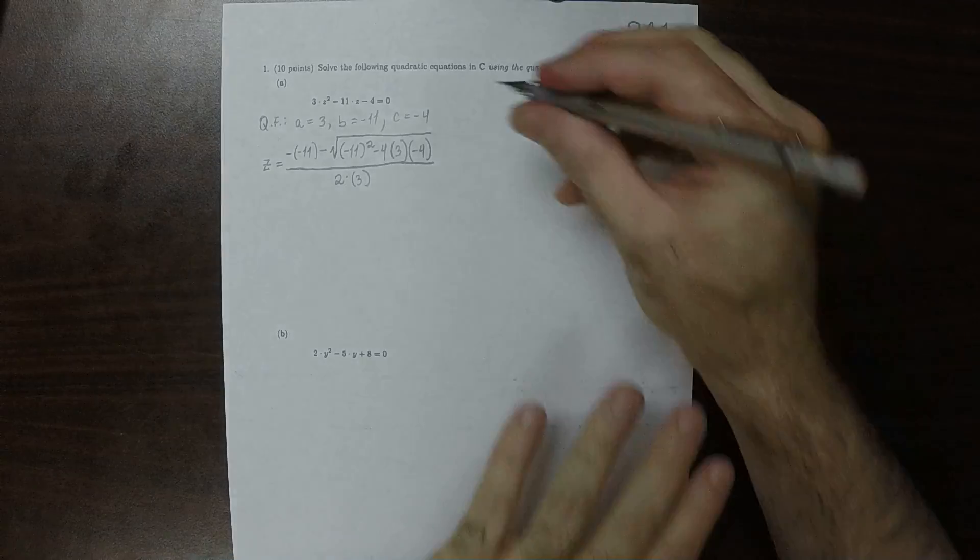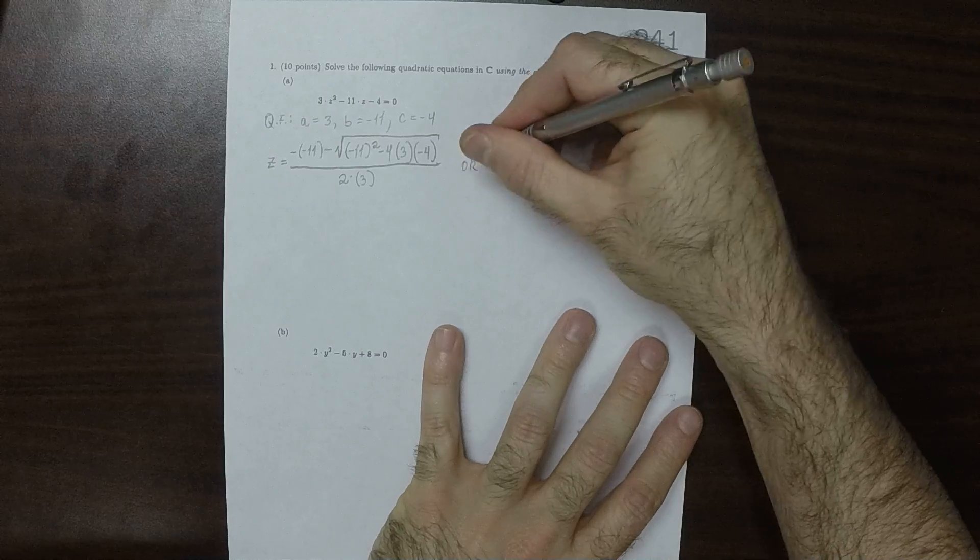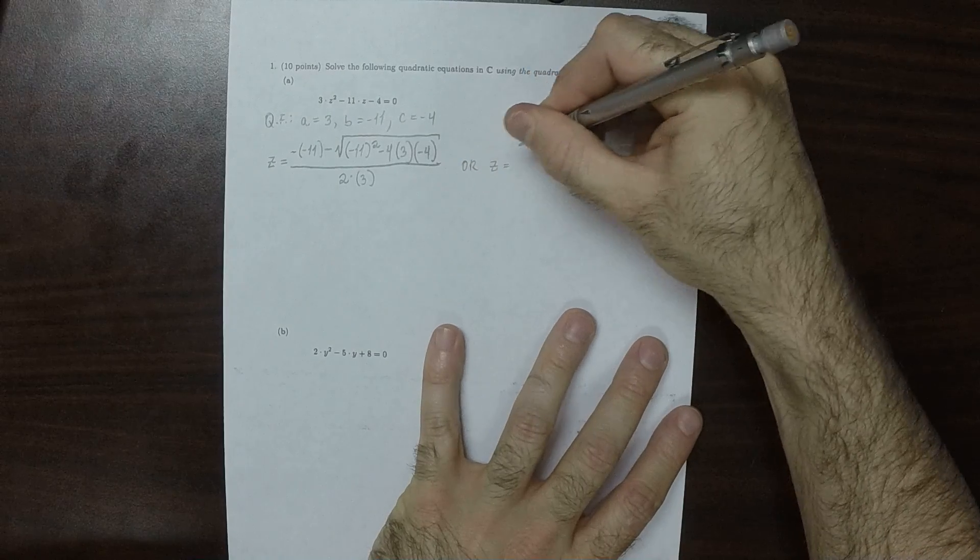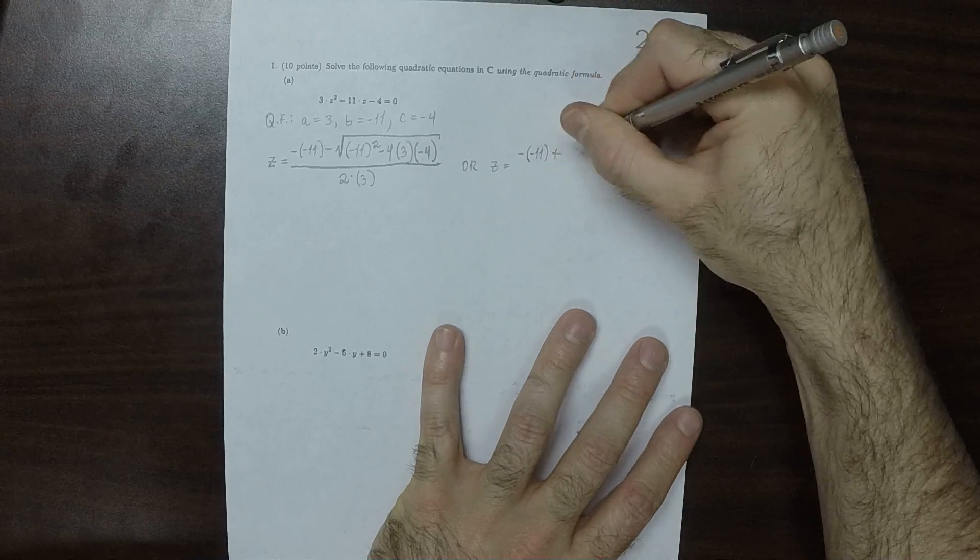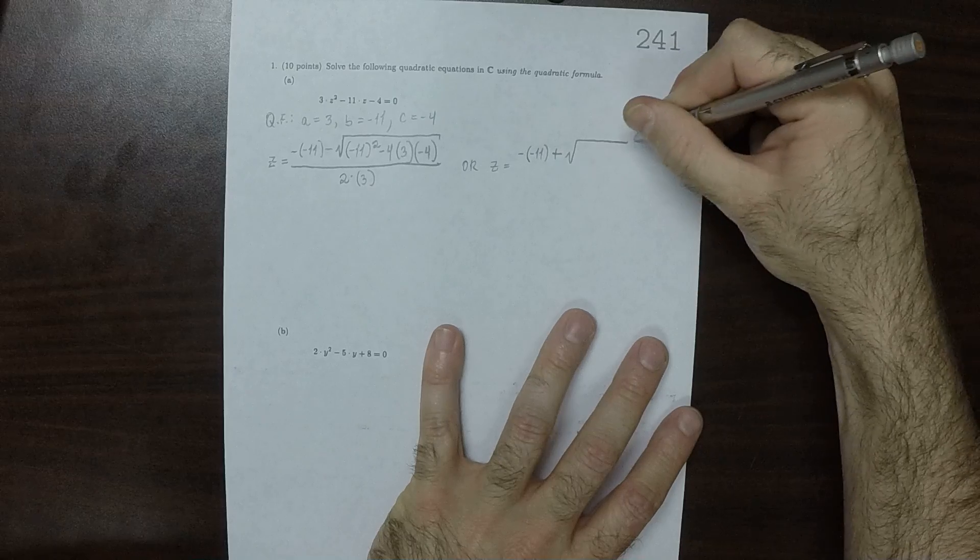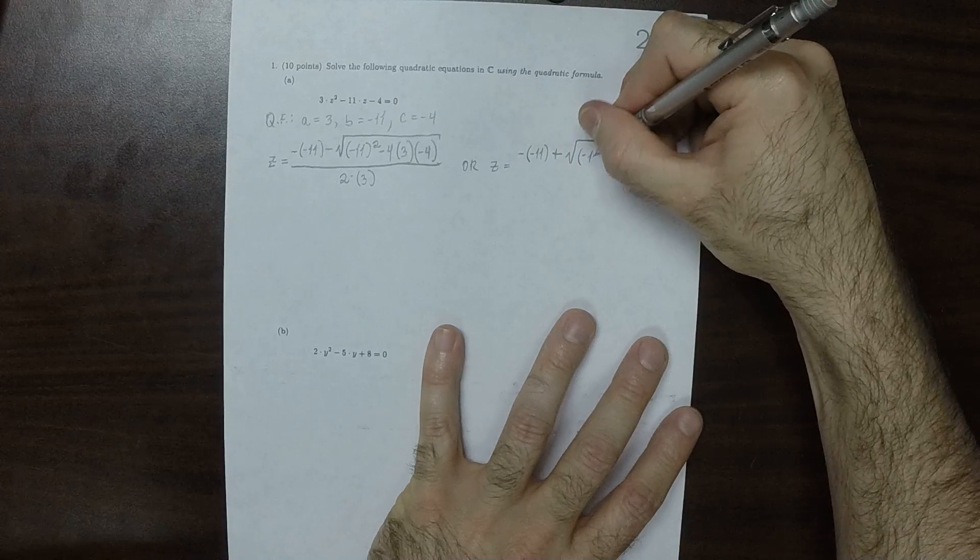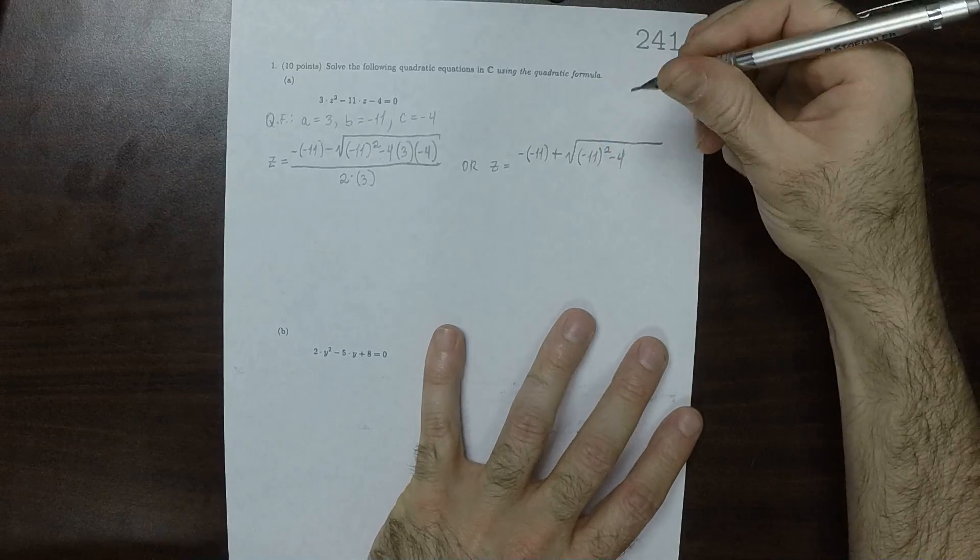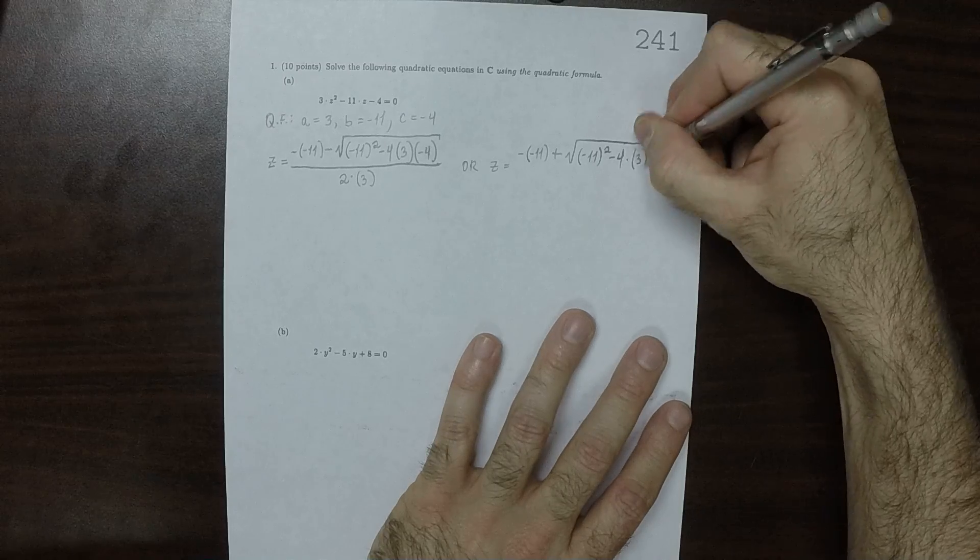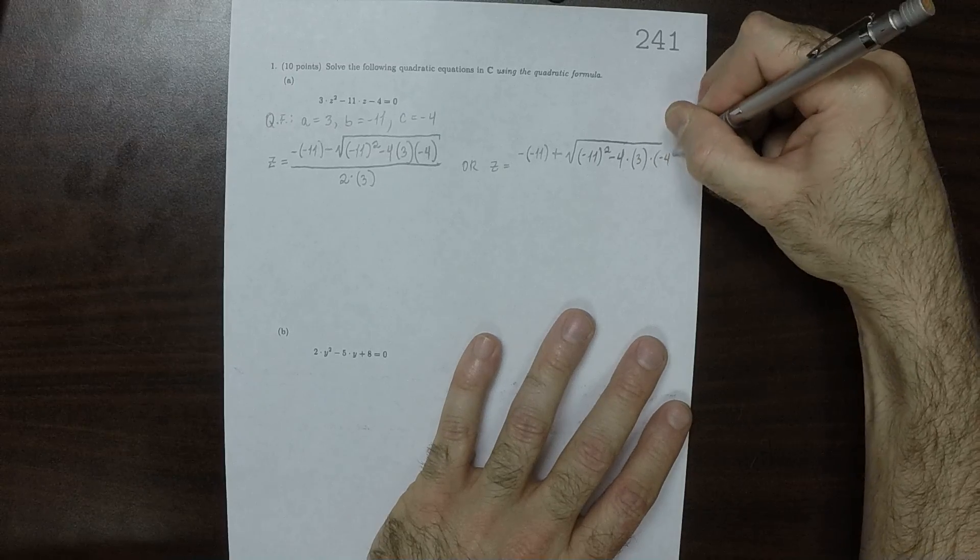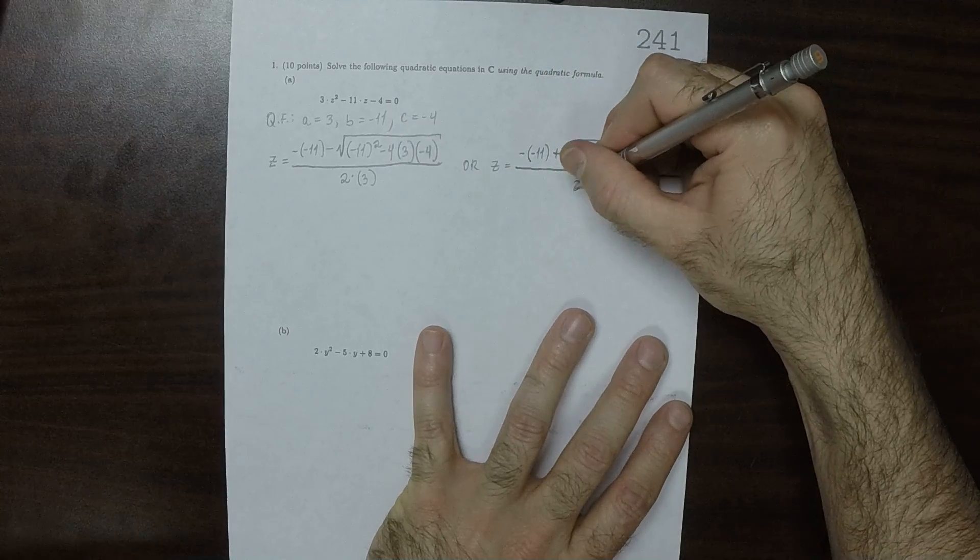The other possibility would be negative b plus the square root of the discriminant, 4 times 3 times negative 4, over 2 times 3.